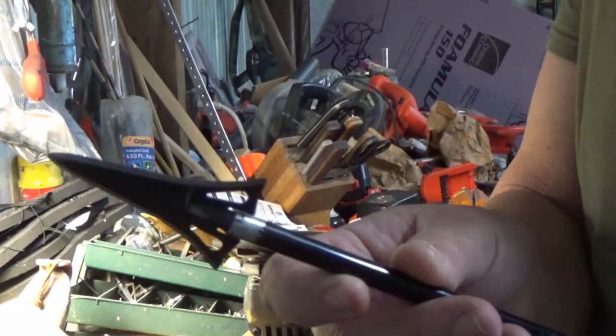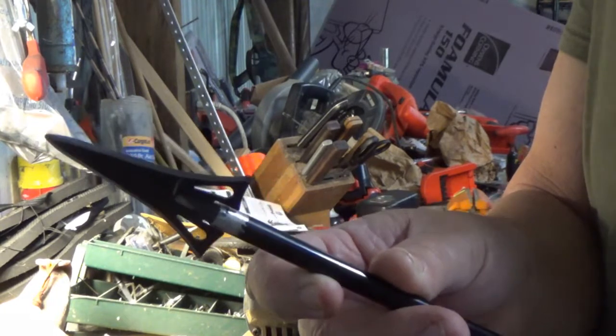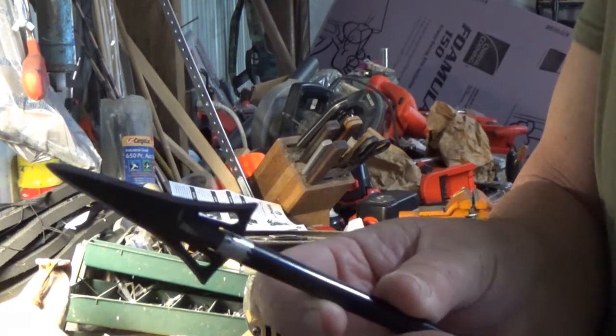Okay, just a quick tutorial on how I sharpen the Simmons Shark. This is 190 grain.